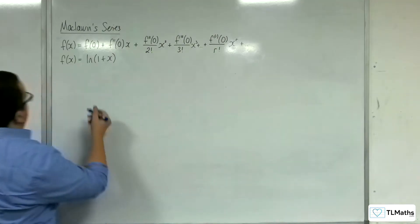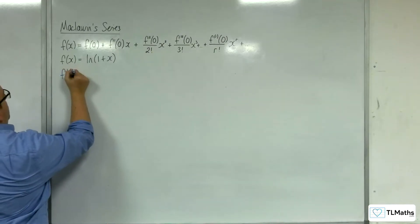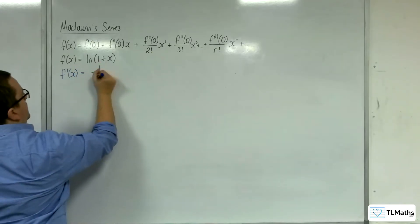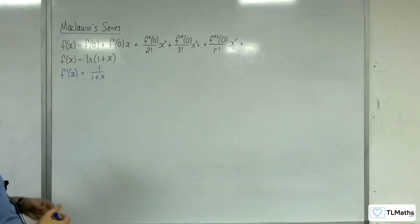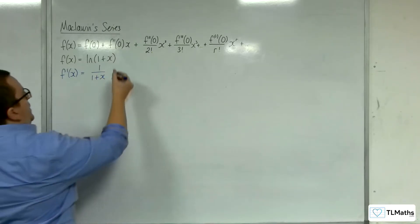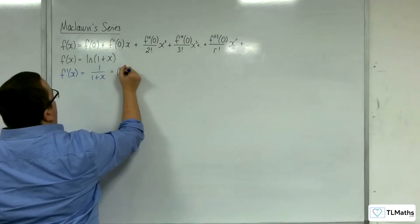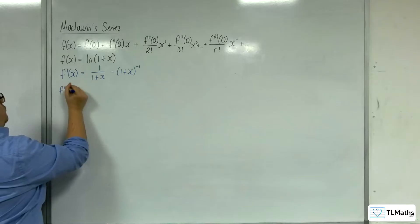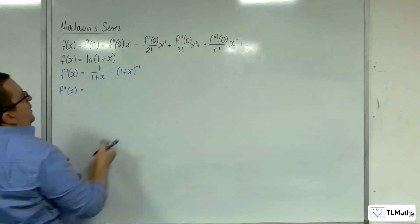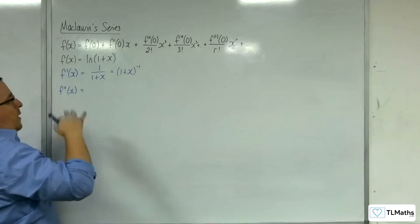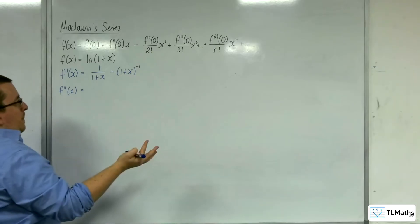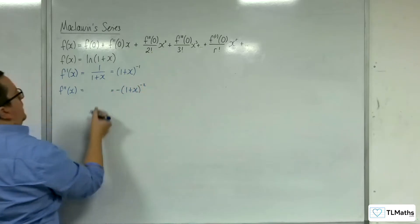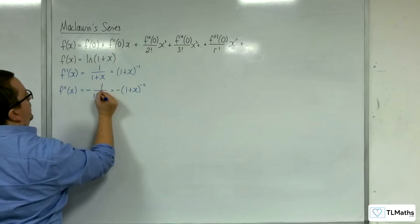So what we need to do is differentiate this. So f prime of x is going to be 1 over 1 plus x. You might find it easy to differentiate each successive term by rewriting it as 1 plus x to the minus 1. So f double prime of x is going to be minus 1 times 1 plus x to the minus 2, which is minus 1 over 1 plus x squared.